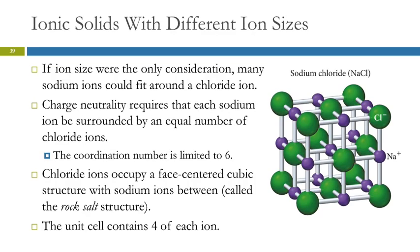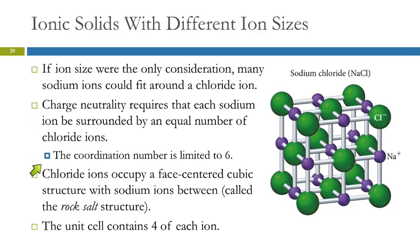If we have different ion sizes, things change. In sodium chloride, the sodium ion is much smaller than the chloride ion. If size were the only consideration, you could fit many sodium ions around a single chloride ion. But charge neutrality requires one sodium ion for each chloride ion, so each sodium must be surrounded by an equal number of chloride ions, limiting the coordination number to six.